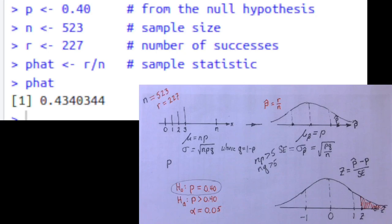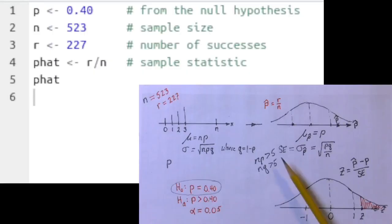The P hat is 43%, and the research hypothesis is 40%. We want to find out what SE is, but before we can do that, we'll need to know what Q is. So we'll add this next line in our R code.